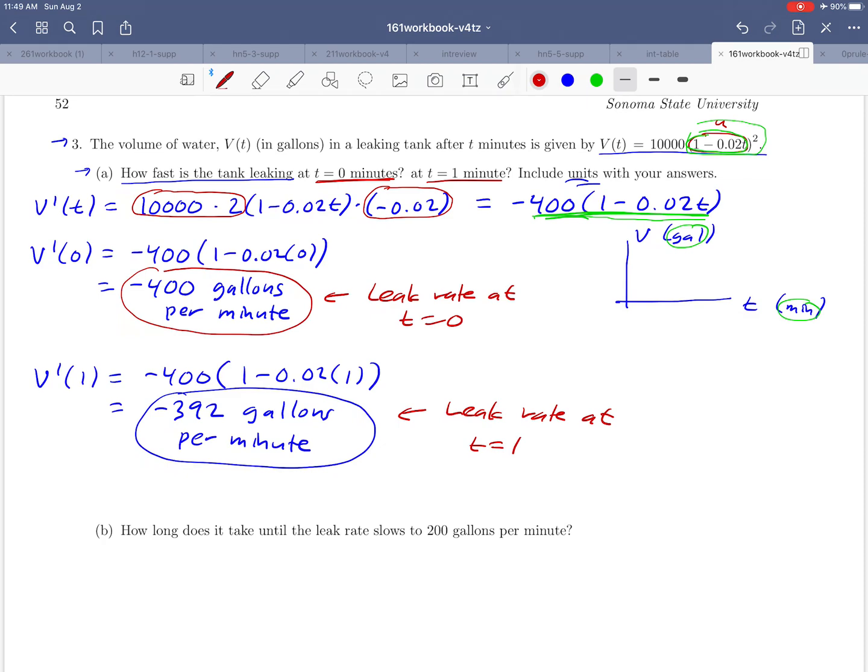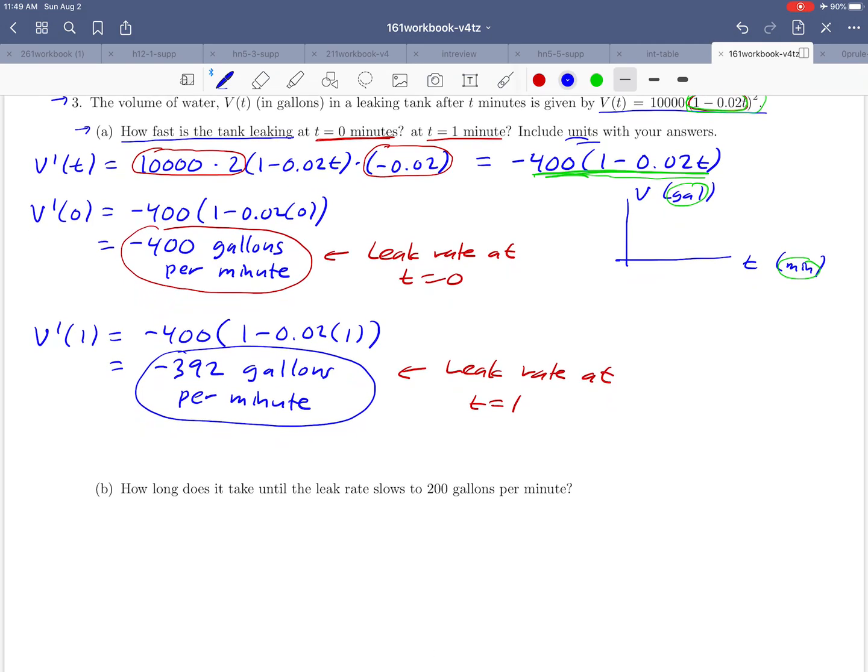So I think we have finished with part A. Let's move on, see what part B is asking us. So here, they'd like us to tell how long does it take until the leak rate slows to 200 gallons per minute. Notice that that 200 gallons per minute is a value of the derivative. It's a rate of change.